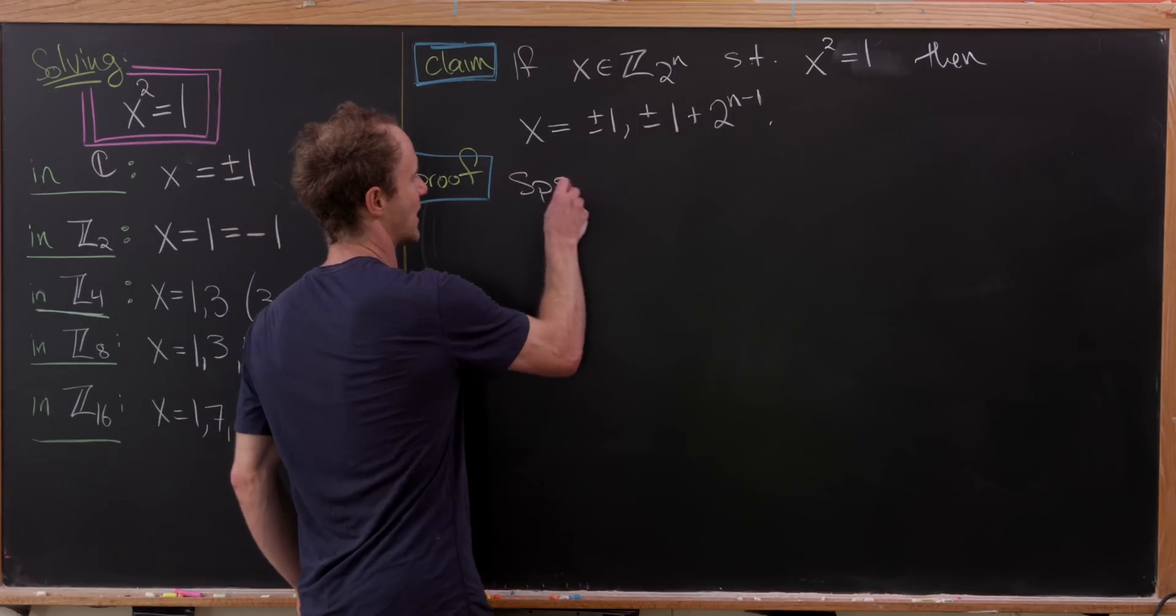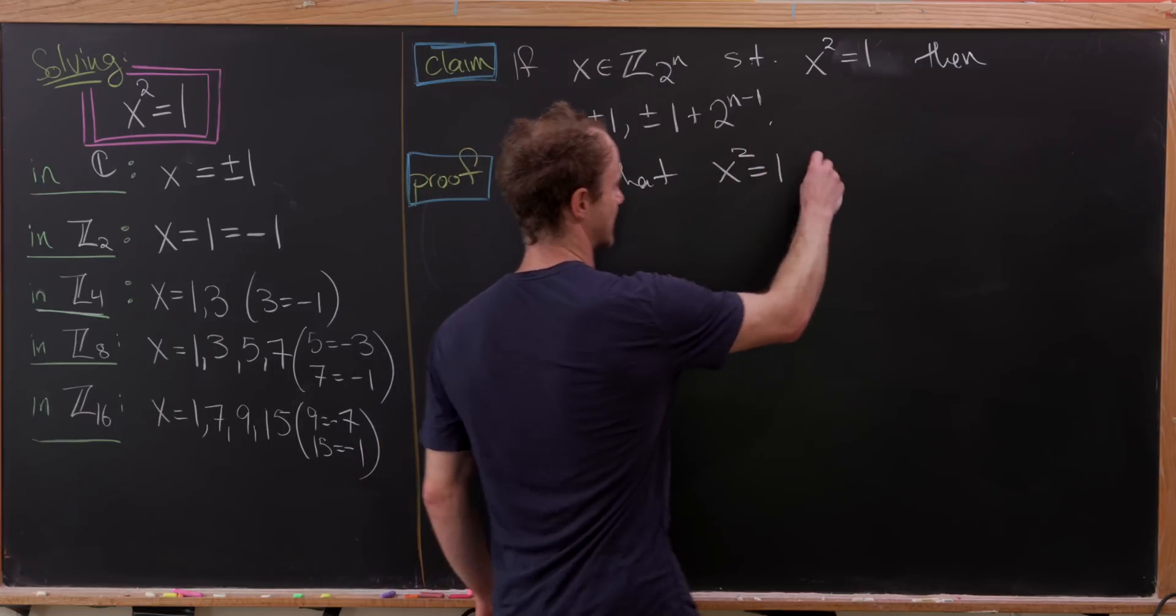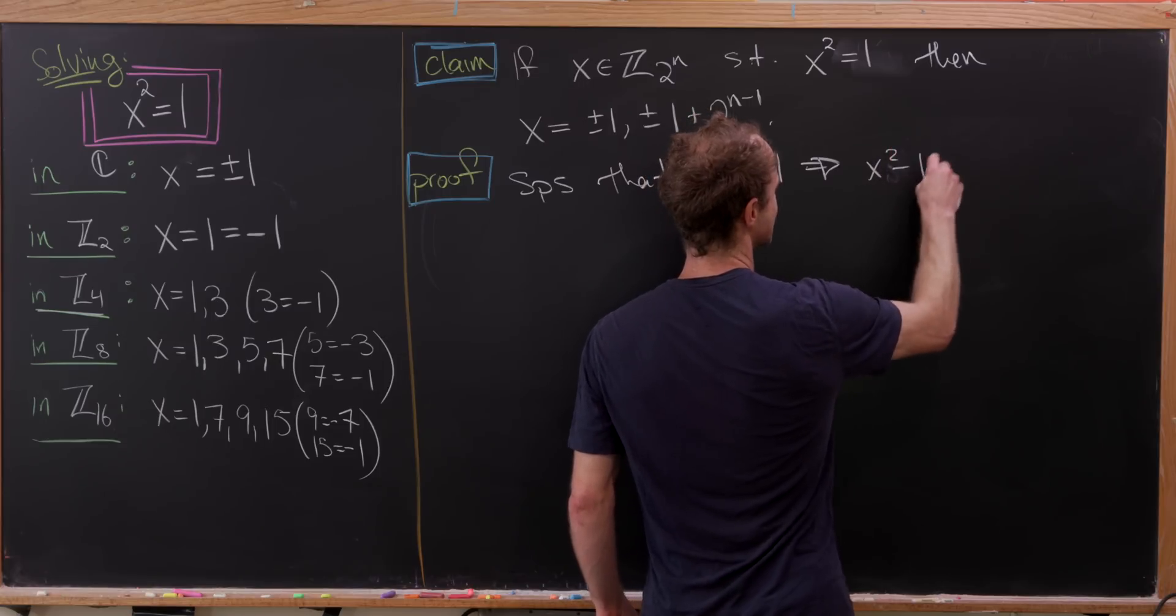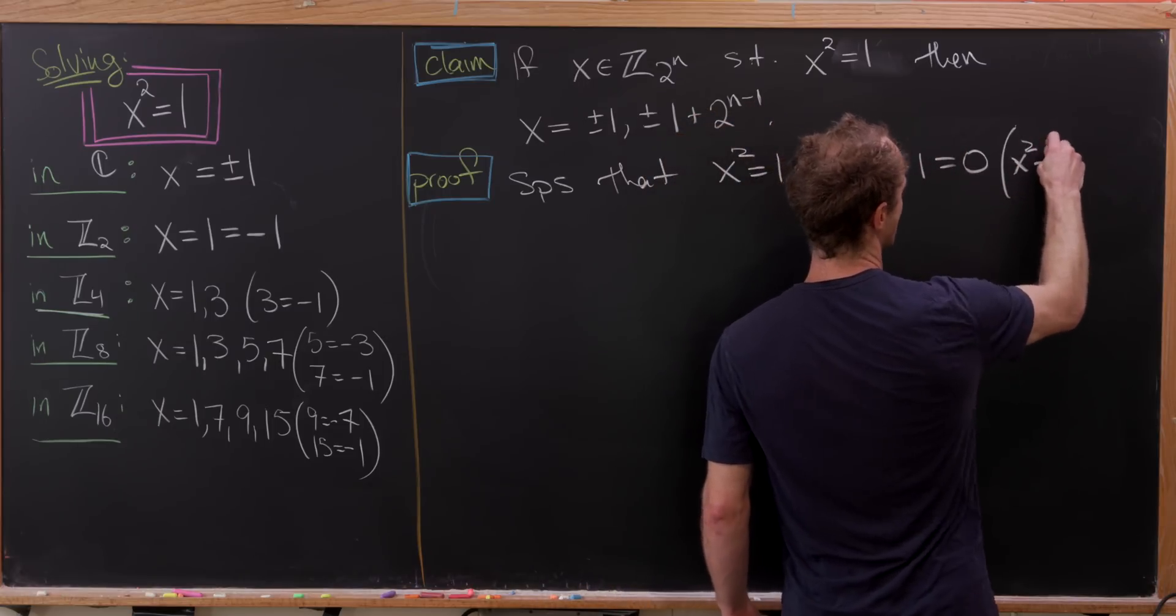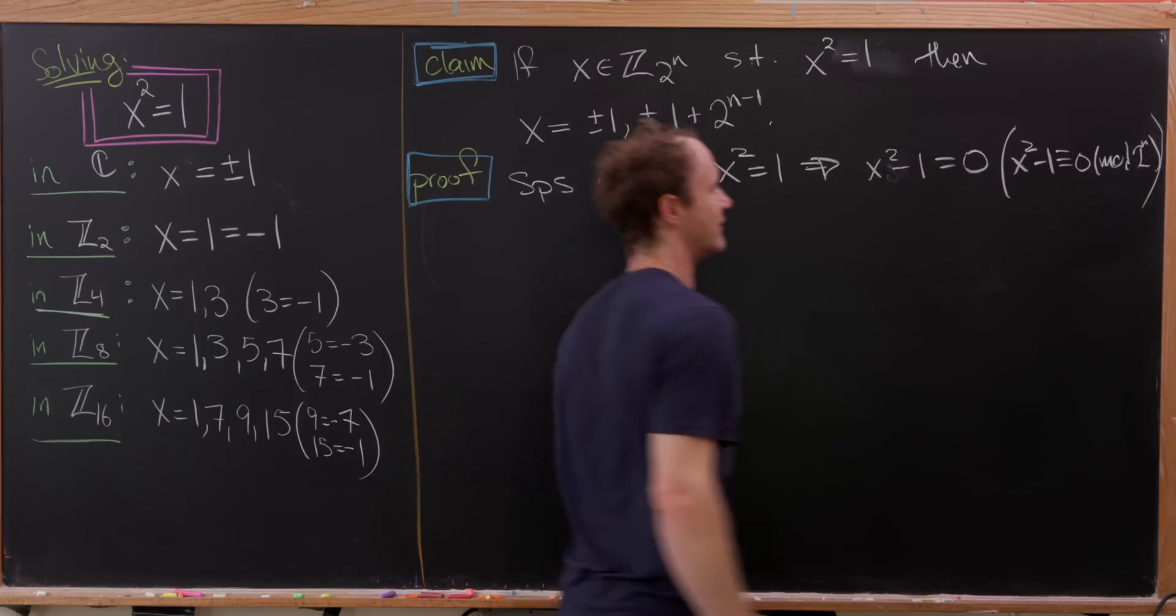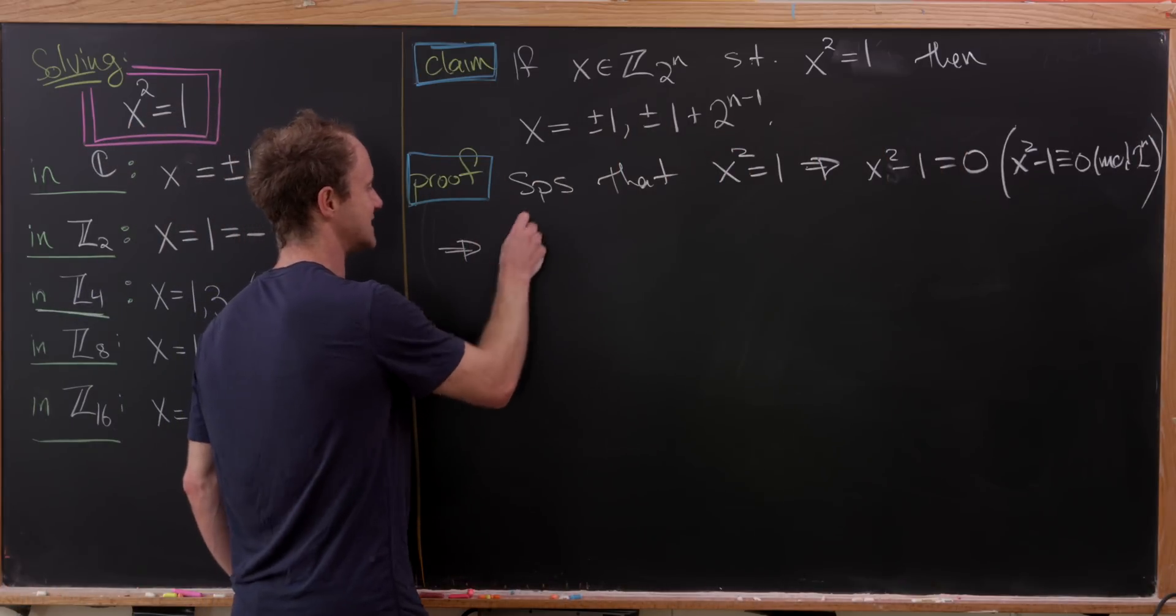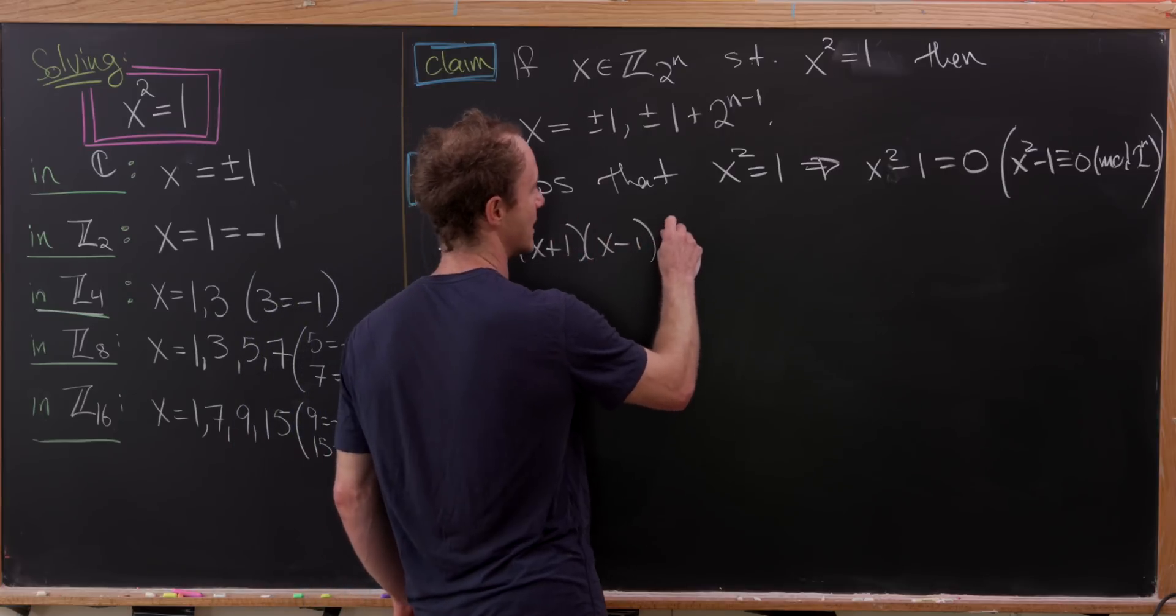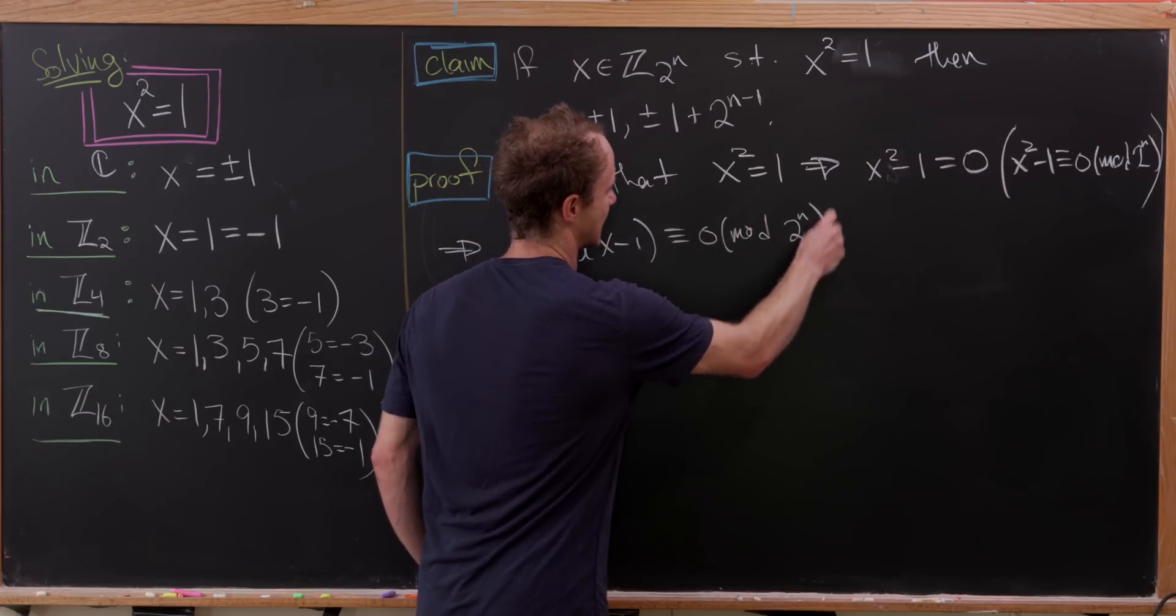So let's suppose that we have x² = 1. But observe, that means that x² - 1 is equal to 0. Really, we're saying x² - 1 is congruent to 0 mod 2ⁿ, given our setting here. But now let's factor that and see that that means that (x+1)(x-1) is congruent to 0 mod 2ⁿ.